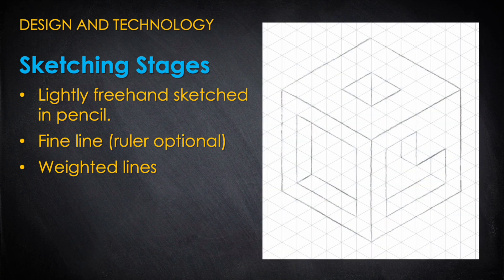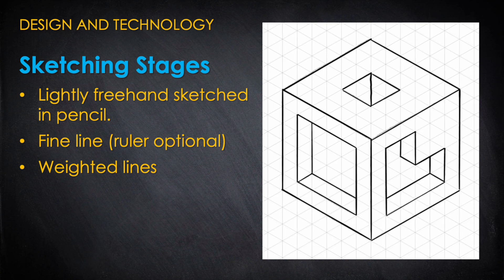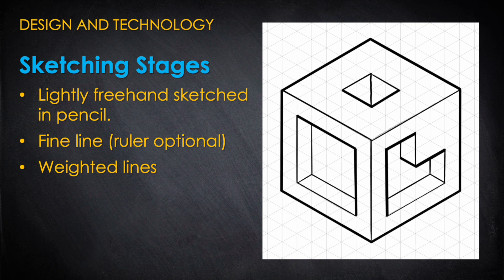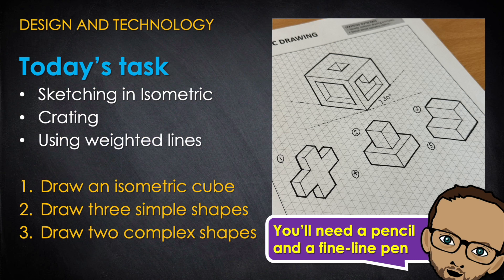In this tutorial you'll follow along by lightly sketching a range of fairly simple isometric shapes, outlining each shape with a fine line pen and then adding weighted lines to finish. Once you've had some practice you can challenge yourself by drawing some more complex isometric shapes.